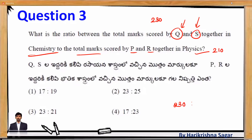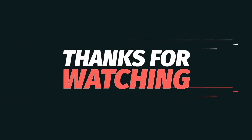So the ratio is 230 to 210, which simplifies to 23:21. The answer is option 3.